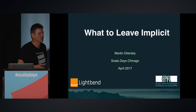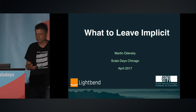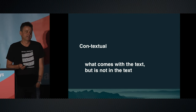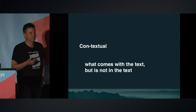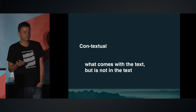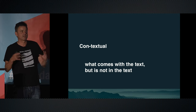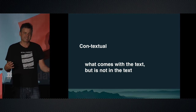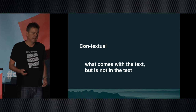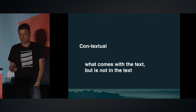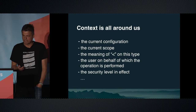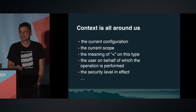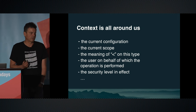Because the talk is about implicit — what to leave implicit. Implicit has a lot to do with context, and contextual means what comes with the text but is not in the text. The 'con' is the 'cum' in Latin, so it says it's with the text but not in the text. We're going to talk about essentially what that means and how we deal with context, because context is all around us.